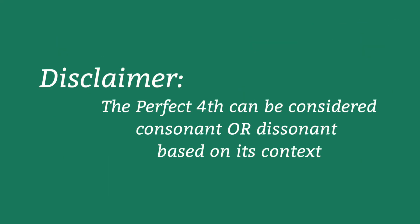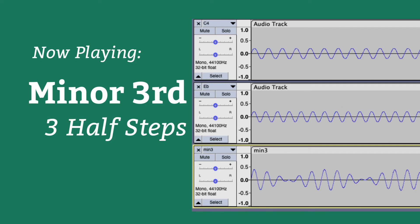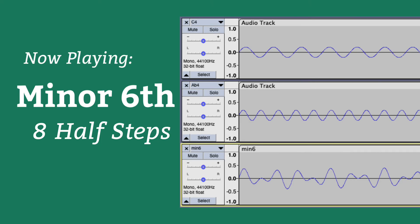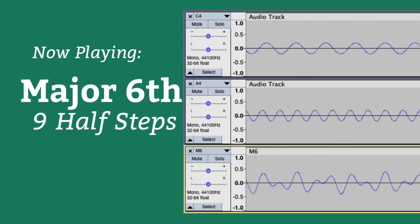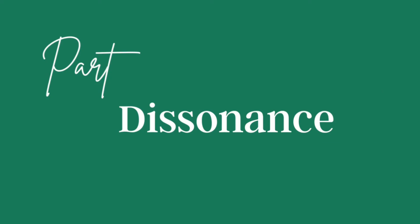That said, there are some caveats with the perfect fourth that we can get into more as we go along, but long story short, it can be considered consonant or dissonant based on its context within the music. The other intervals considered to be imperfect consonances include the minor third, the major third, the minor sixth, and the major sixth. The ratios of these intervals feel stable because the frequencies of the two fundamental pitches interact with each other somewhat evenly. And when they don't interact evenly, that's when you get what we call dissonance.